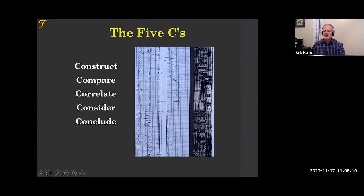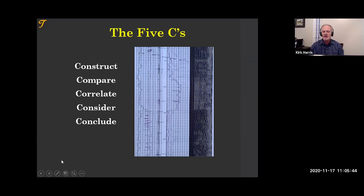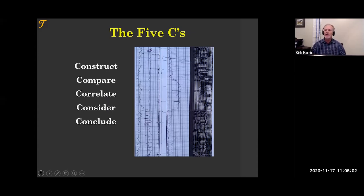The first C is to construct the well. Then we're going to compare log sections — when we compare, we look up and down the log, focusing on the variable density log. We then correlate, looking side to side to ask why the change occurred. We then consider what can be going on in the wellbore that may be affecting our log. And then we conclude with how this cement job actually ended up.